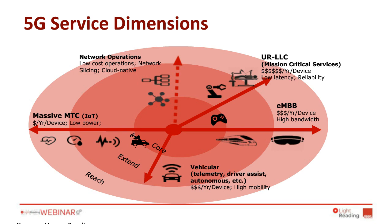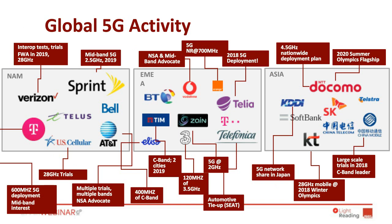I'm going to give a quick update on activity towards launch. There's really a lot happening in every global region. In North America particularly, you're seeing a span of deployment plans from low-band 600 MHz with T-Mobile right up to 28 GHz millimeter wave with Verizon and AT&T, with Sprint also doing interesting things in mid-band.